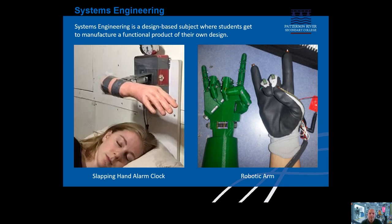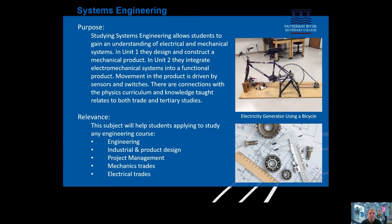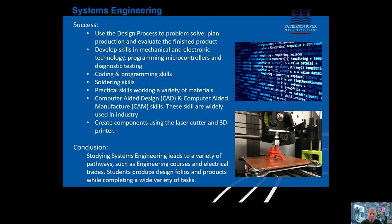Welcome to course counselling for VCE Systems Engineering. In this course, Unit 1 focuses on mechanical systems and covers topics such as gears, levers, inclined planes and pulleys. You'll complete a project of a mechanical product designed to a set criteria. Unit 2 covers electrical components such as resistors, switches and relays, and a second major project is developed with an integrated electromechanical system. The success criteria for your project is that you must follow the design process to plan, build, adapt and evaluate your major project. You'll need a variety of skills and processes, such as working with different materials — wood and plastics — using CAD-CAM systems, laser cutters, 3D printers, coding and soldering.